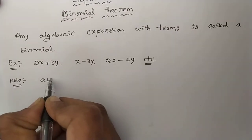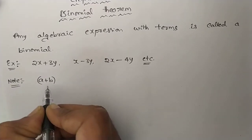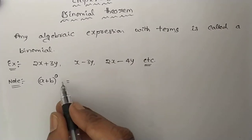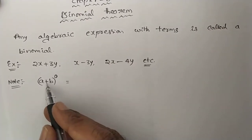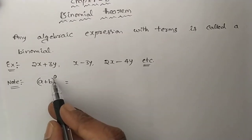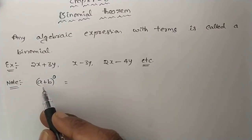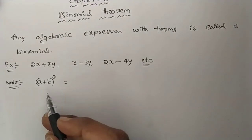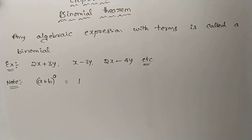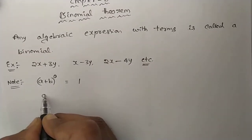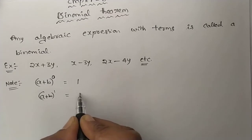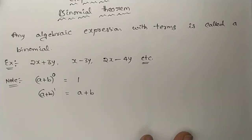We know very well about the formula (a + b)². Before that, (a + b)⁰ — by using the laws of exponents, a⁰ = 1, so (a + b)⁰ = 1. And (a + b)¹ = a + b.